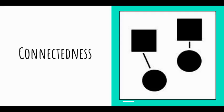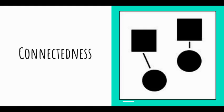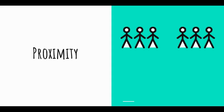Another gestalt principle is connectedness, which again goes back to wanting to see a whole from its parts. Rather than seeing a square, a line, and a circle separately, we see them as one whole piece. When you look at a chair, you don't see two arms, a back, a bottom, and legs separately — you put all those pieces together to see an entire chair. When you look at a person, you put the head, body, arms, and legs together to see that thing as a whole piece.